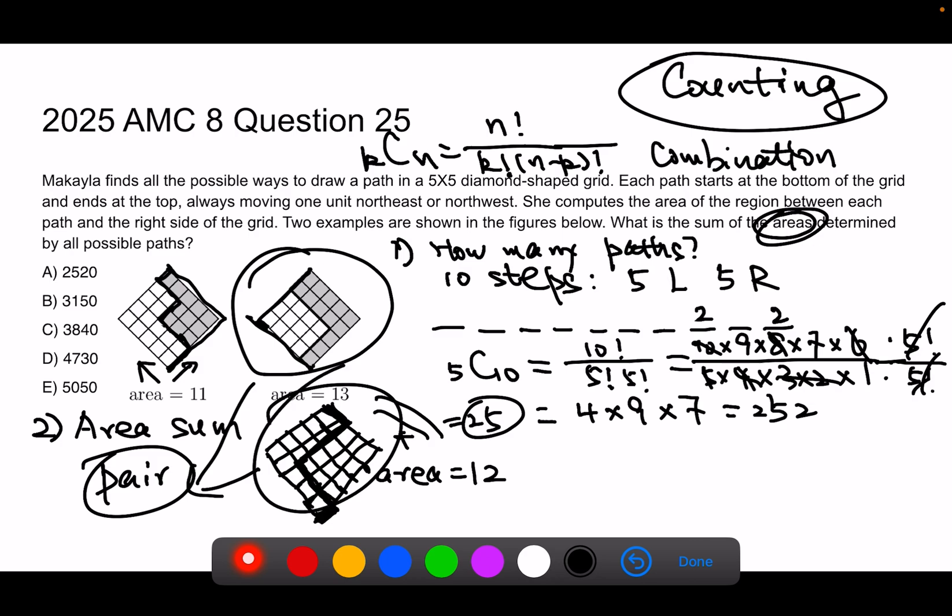And for every path, you can find such a pair. Those two is a pair. Because you take this one, take the top one, flip it from left to right, you get the bottom one. So that's a pair. And each pair, the sum of the area is 25.